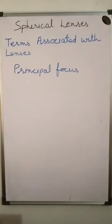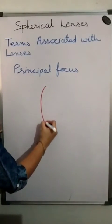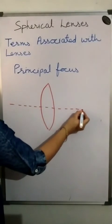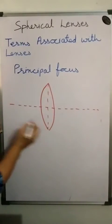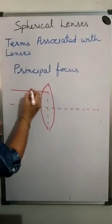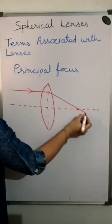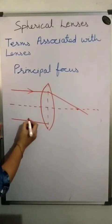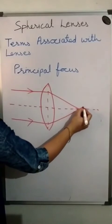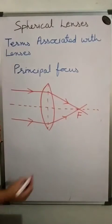Now, what is the principal focus? For a convex lens, rays coming parallel to the principal axis always meet at a point. This point is called the focus, or principal focus.